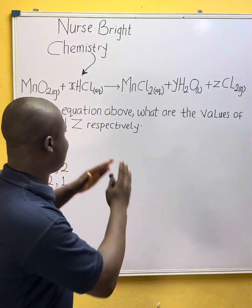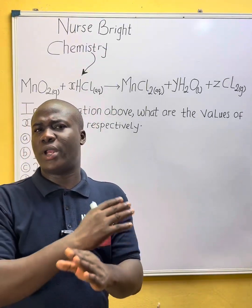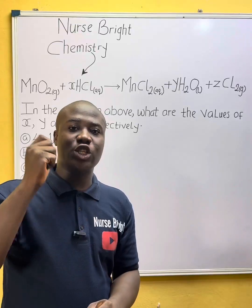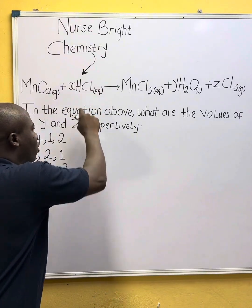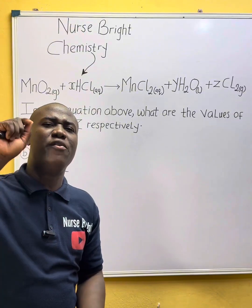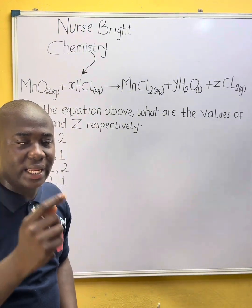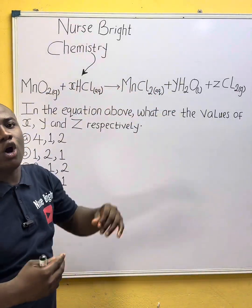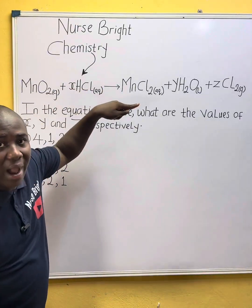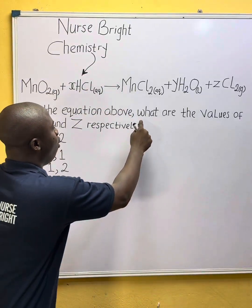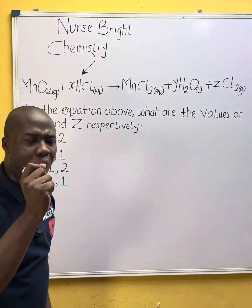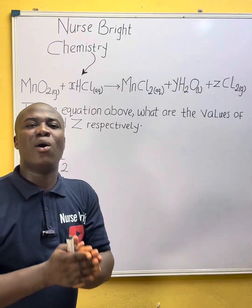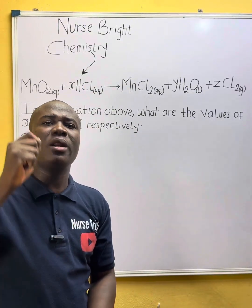Let's say you came across this question in your chemistry exam. How will you solve it? It is very easy. Now let's solve together. The question says, in the equation — which you can also call a reaction — what are the values of X, Y, and Z respectively? This question is extremely very easy.